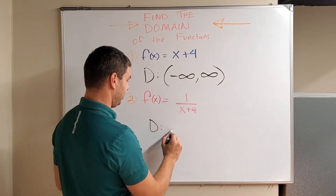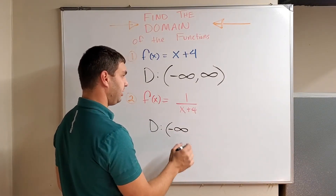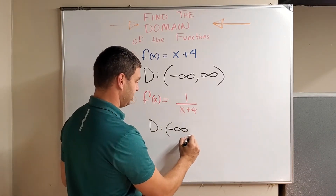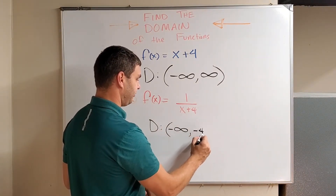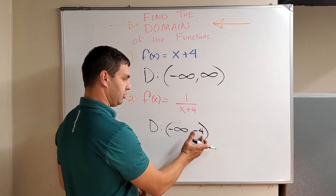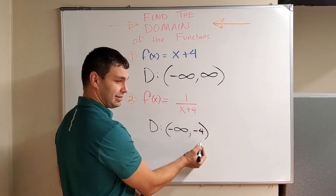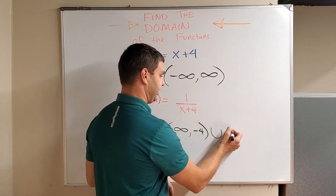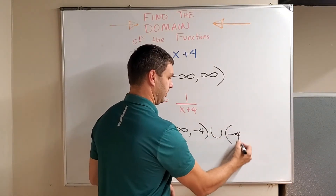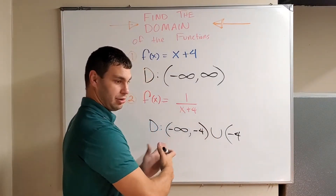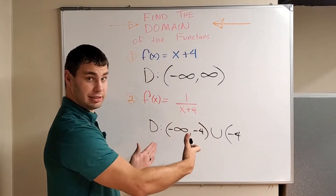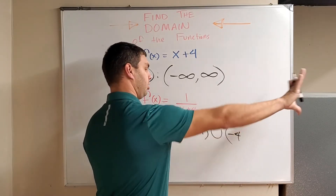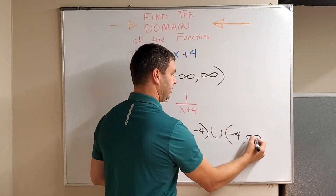To write that, I'm going to start at negative infinity, but I have to stop when x is negative four. So I'm going to say from negative infinity all the way up until negative four — I can get as close as I want to it, so it gets a parenthesis, not a bracket; we're not including negative four. Then we union that with the other side of negative four: skip it, and go from negative four all the way to positive infinity.